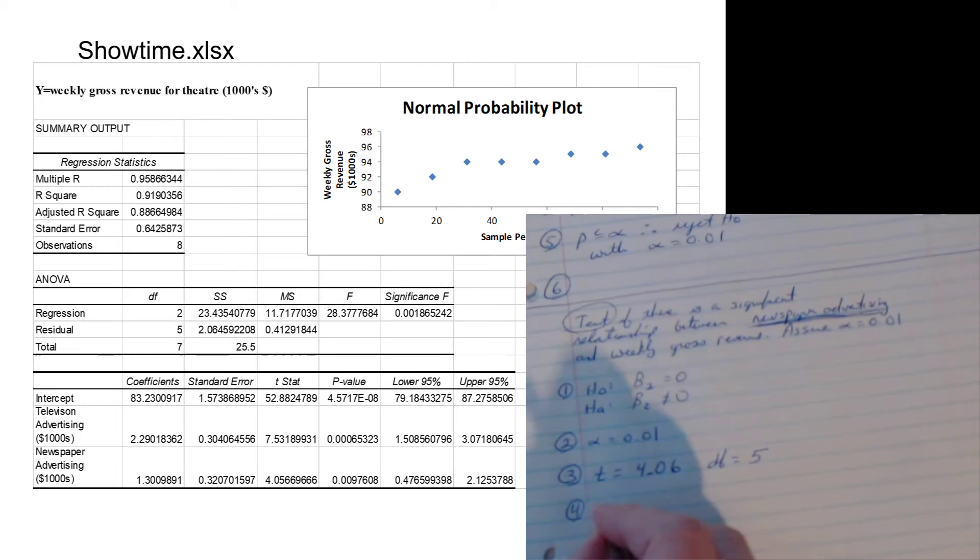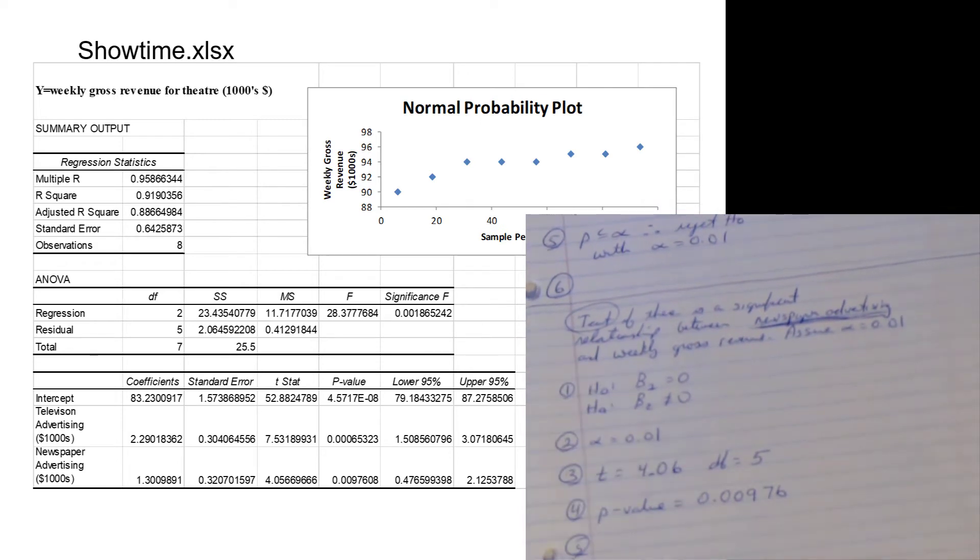Step four: we look in that same row we found the t-stat and we see a p-value of 0.00976. Step five: p is less than or equal to the alpha, therefore we dot dot dot fill in the blanks there. We can conclude then that dot dot dot from that particular decision. Very important: if you don't know what happened at the dot dot dot part, go review the simple linear regression notes and look at the hypothesis testing steps in chapter nine or in the slides for hypothesis testing.